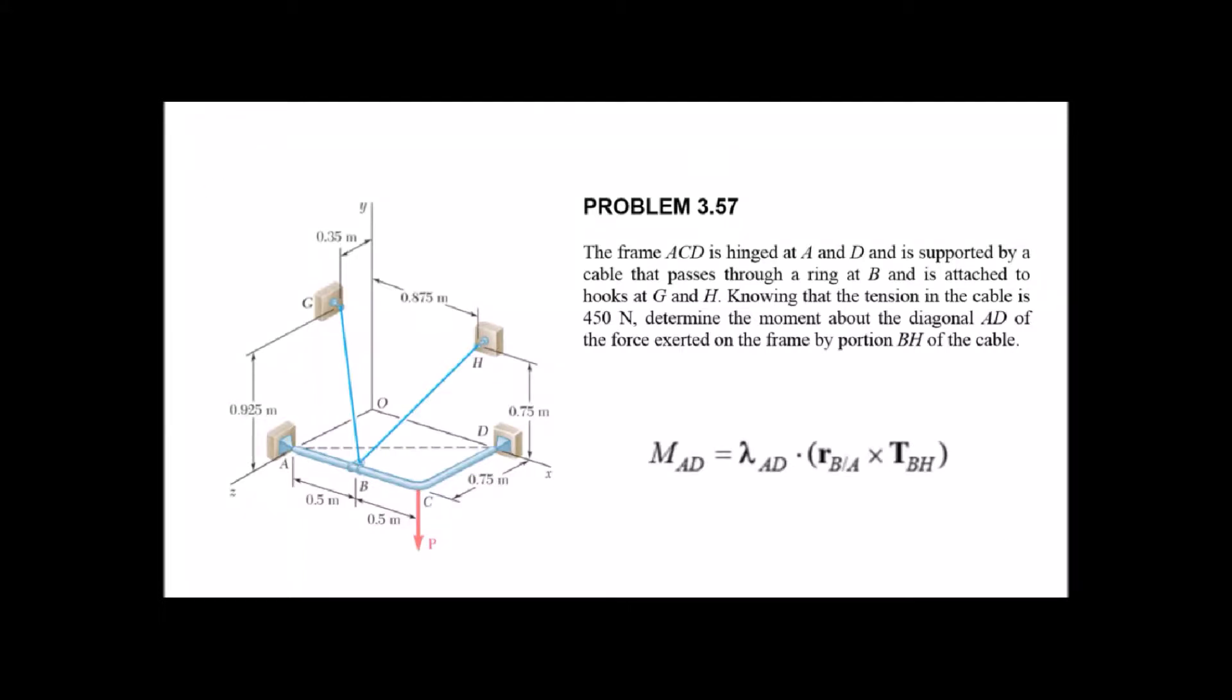Here's an example of a dot and a cross product together. So what we have is a frame with a cable. The cable has a tension of 450 Newtons in it and we want to know the moment around the diagonal AD. So not the moment around the IJK axes but the moment around this new direction and that's where the dot product is going to come in.